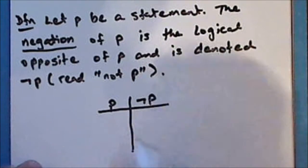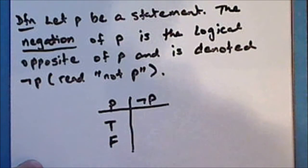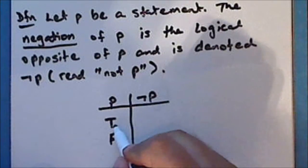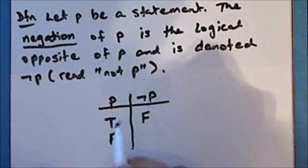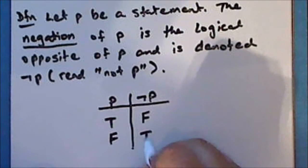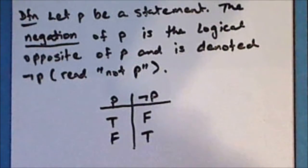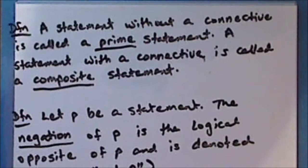A given statement can be either true or false. If statement P is true, then the negation of P is false. And if the statement P is false, then the negation of P is true. Let's look at some examples.